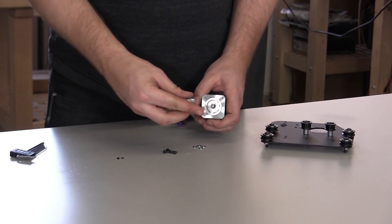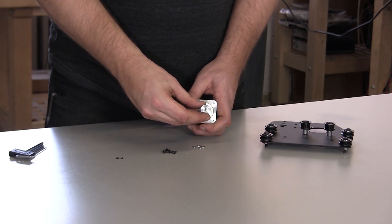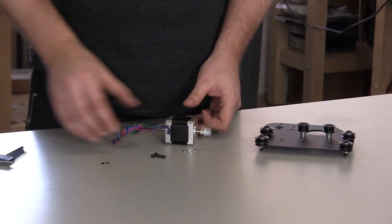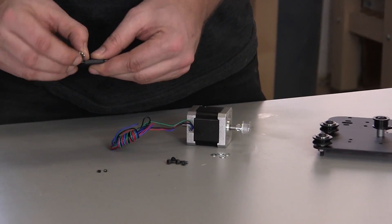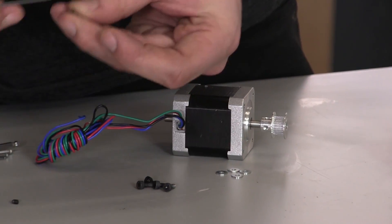Now let's put your NEMA 17 motors onto your Y motor mount plates. We're going to start again by putting the pulley onto the shaft of the motor and using the set screws to hold it in place.